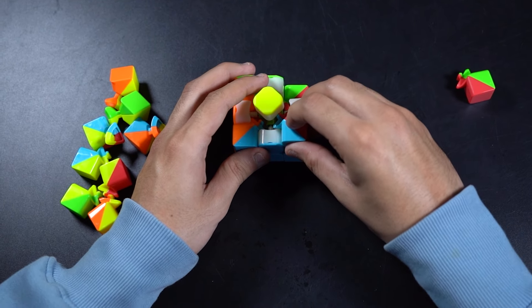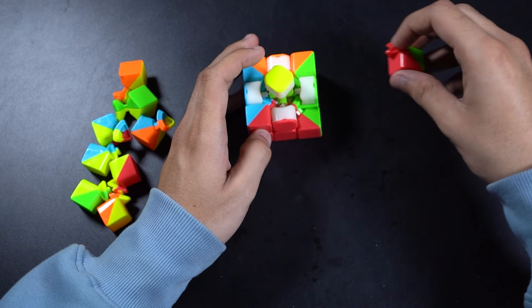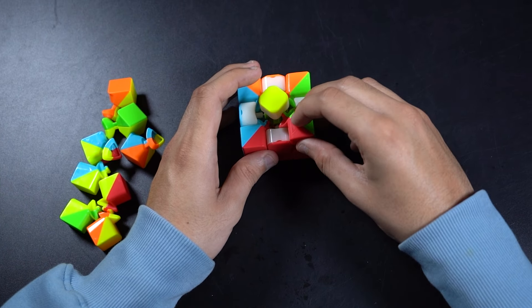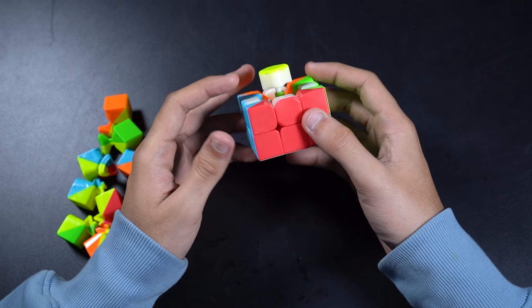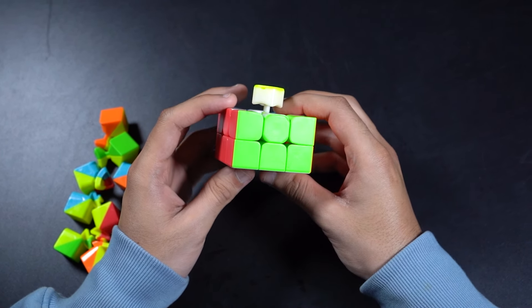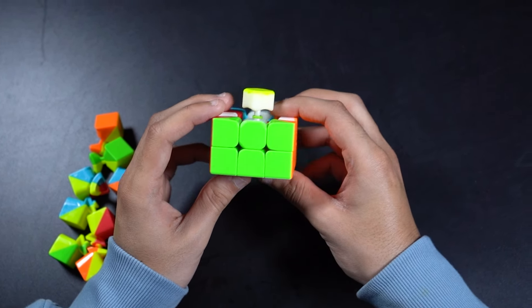This is the blue and red one. And finally this is the red and green one. So we have solved two layers and by the end of the step our cube will look like this.